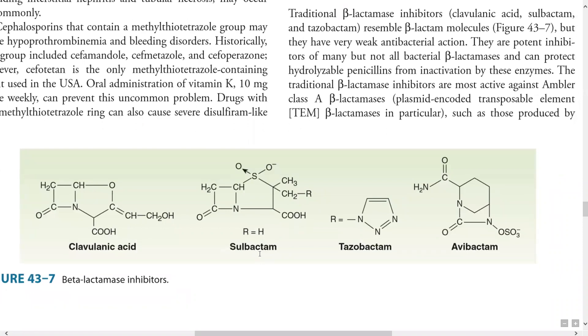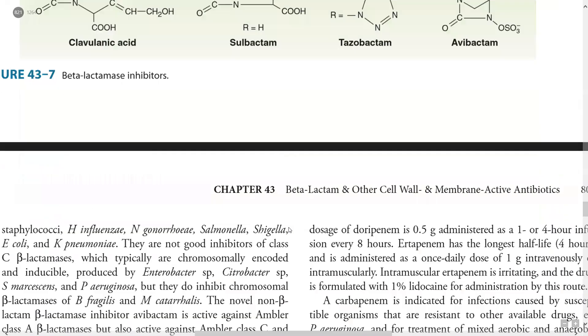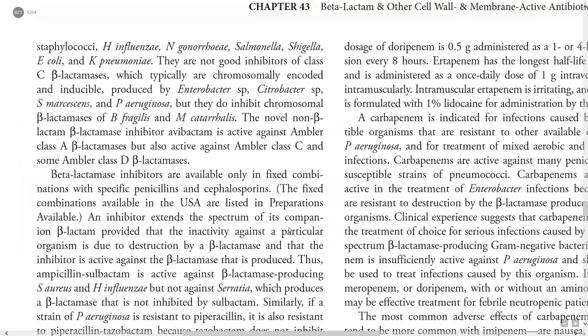Those can be inhibited by these beta-lactamase inhibitors — clavulanic acid, sulbactam, and tazobactam. We can see their structures here. These traditional inhibitors are not good inhibitors of Class C beta-lactamases.